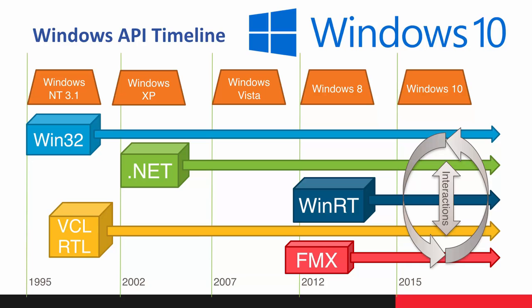That interoperability is extended to the VCL as well as FireMonkey. VCL and FireMonkey can take advantage of WinRT APIs as well as all those Win32 APIs. COM Interop and other interoperability lets you interop with .NET as well. You can think of Windows 10 as kind of the United Nations of operating systems — all these APIs can now work together in harmony, and you can use whatever API makes the most sense for each feature.